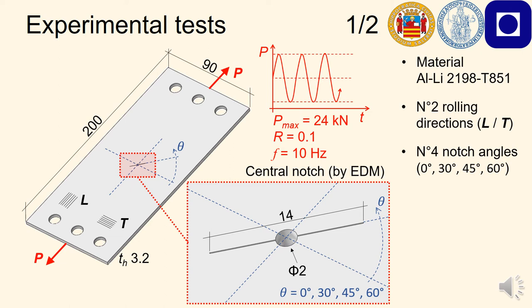The loading condition consisted of a sinusoidal load having a maximum value of 24 kN, stress ratio of 0.1 and frequency of 10 Hz. The same load was used for all tests. We tested one specimen for each combination of rolling direction and notch angle, for a total of 8 specimens tested.